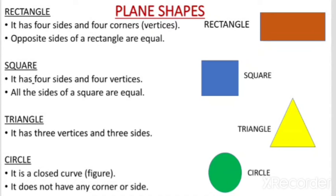The third shape is a triangle. A triangle has 3 vertices and 3 sides. The next shape is a circle. A circle is a closed figure or curve — it does not have any corner or side, and it has no line segments. Thank you, students.